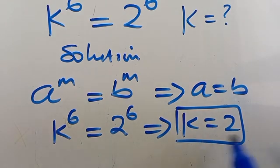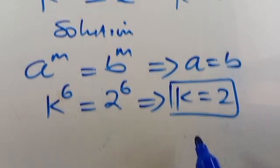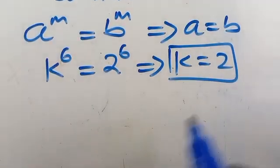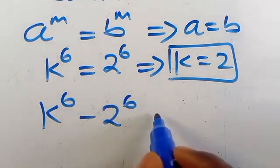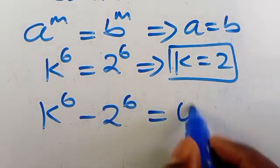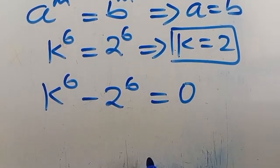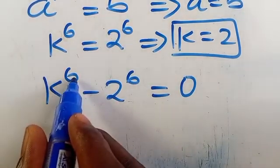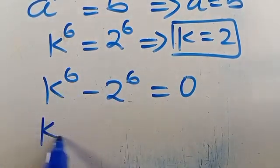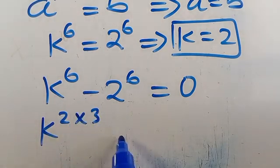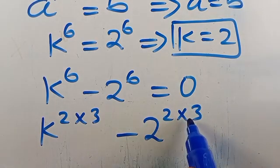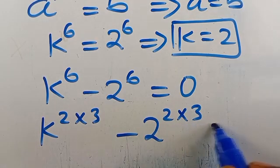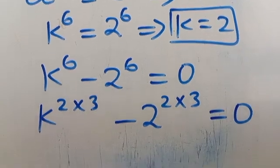So k equals 2 is not the only solution for this problem — let's see how to solve it fully. We recall that we have k to the power of 6 minus 2 to the power of 6 equals 0. Let's write k^6 as k to the power of 2 times 3, minus 2 to the power of 2 times 3, and set everything equal to 0.